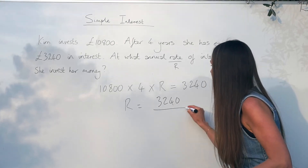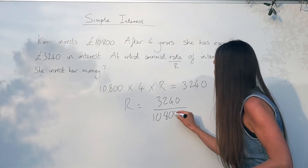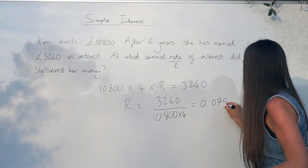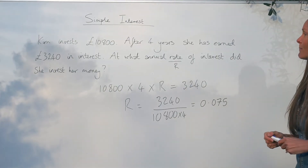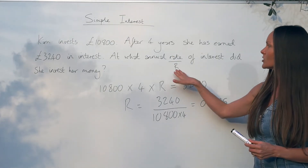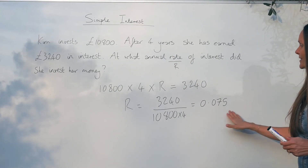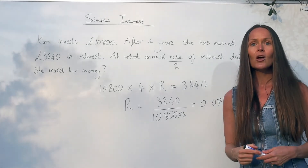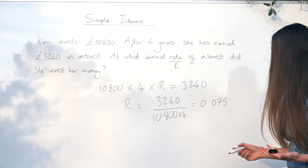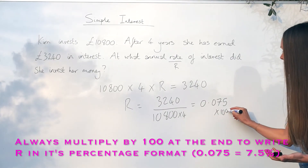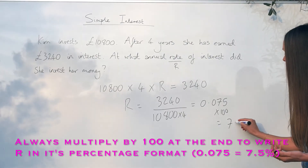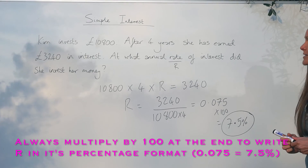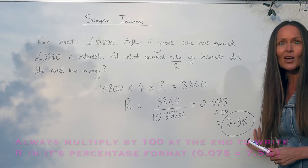To do that, divide three thousand two hundred and forty by ten thousand eight hundred and also by four. In the calculator you should get 0.075. We're not quite finished because this is in decimal format, so to turn a decimal into a percentage you multiply by 100, giving seven point five percent — that was the annual rate of interest at which she invested her money.